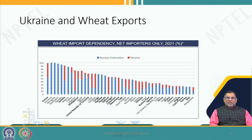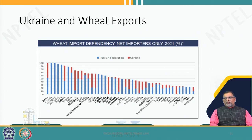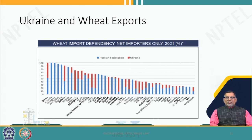We can see the contribution of the Russian Federation and Ukraine in the supply of wheat all over the world. Countries like Eritrea are 50 percent dependent on Russia and 50 percent on Ukraine for their wheat supply. Other countries like Armenia, Mongolia, and Azerbaijan are 100 percent dependent upon Russia. They were severely affected by supply disruptions for some period in 2022, and food and agriculture product supply is going to be affected by conflicts in other parts of the world.